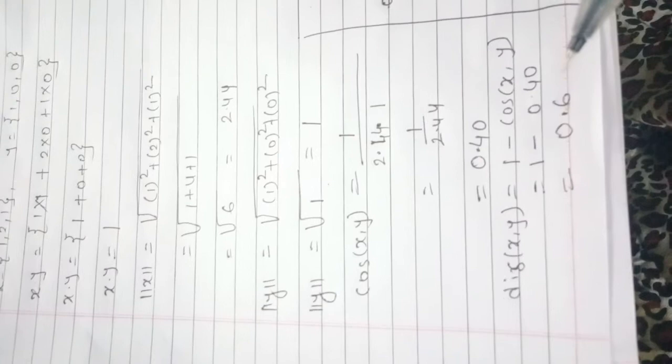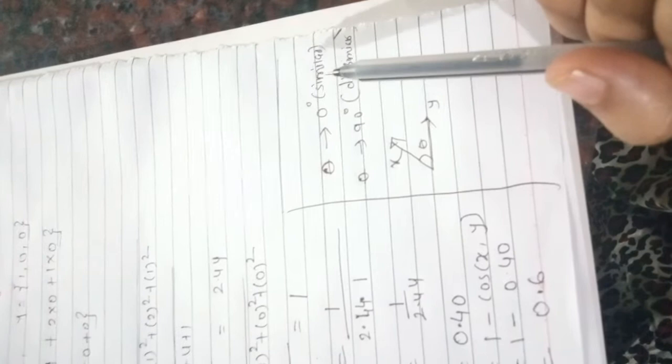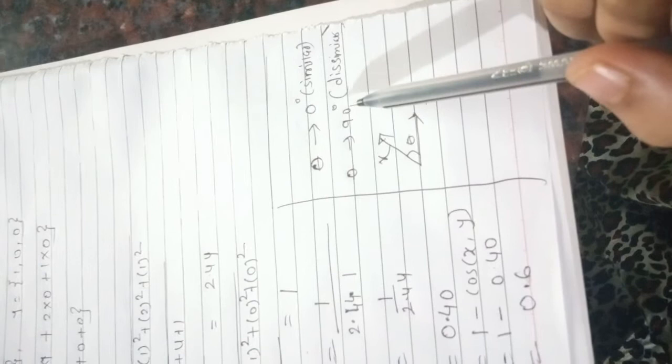Suppose the angle between two vectors is 0, then we can say that the document is exactly similar. And when the angle between two vectors is exactly 90 degrees, then we can say that the document is dissimilar.